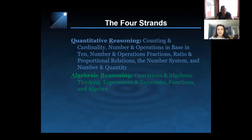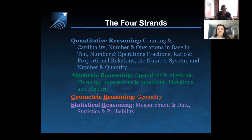Our second strand is algebraic reasoning, denoted by AR, and includes the domains of operations and algebraic thinking, expressions and equations, functions, and algebra. Third, we have geometric reasoning, denoted by GR, which contains the geometry domain. And our final strand is statistical reasoning, denoted by SR, which includes the domains of measurement and data, and statistics and probability.